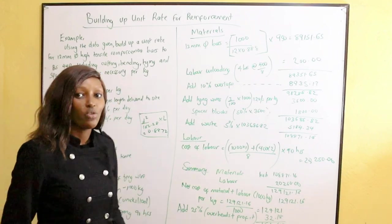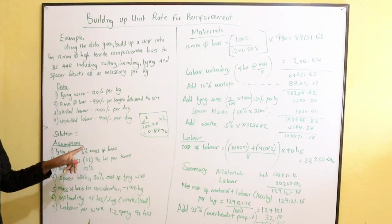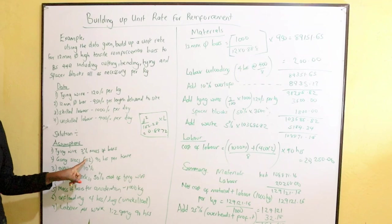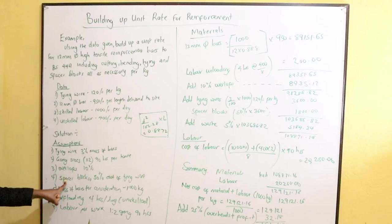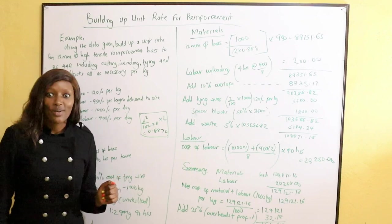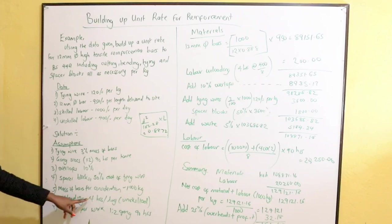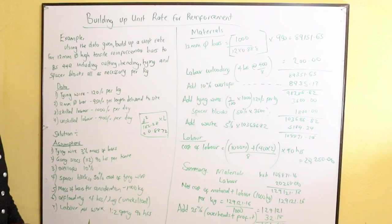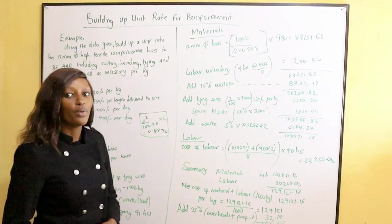The assumptions we shall make are: tying wire is 3% of the mass of bars; the gang size is 1 skilled and 2 unskilled, taking 90 hours to do one tonne of bars; overlaps is 10%; spacer blocks cost 50% of the cost of tying wire. For the calculation, we shall consider 1,000 kg, then divide by 1,000 to get cost per kg. Offloading takes 4 hours and is done by unskilled laborers.